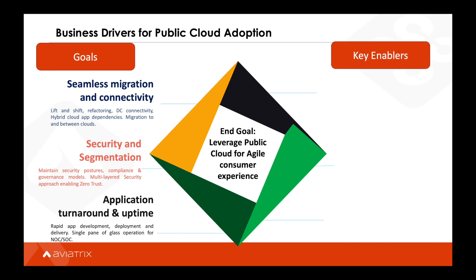So how can enterprises be enabled to meet these goals? First and foremost, there is the networking — we're all familiar with the term plumbing. An application can perform only as well as the underlying network infrastructure, and that infrastructure extends from end to end. In the public cloud, it covers all directions: to a cloud, from a cloud, within a cloud, and between clouds. The networking must be able to scale up and scale out across multiple paths at high throughput.